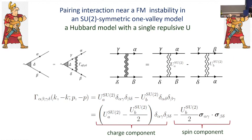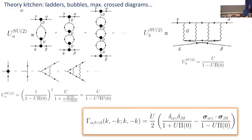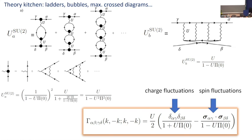Combining these two components, you get a re-normalized interaction that has the original charge-channel interaction, but you also get a component which is a product of two spins — and this is how you get an effective spin interaction in the superconducting problem just by using the anti-symmetrized interaction. After doing all the ladder bubbles and maximally crossed diagrams, the standard result is: two components of the pairing interaction — one from exchange of charge fluctuations and another from spin indices, going with the factor (1 minus u·Π).